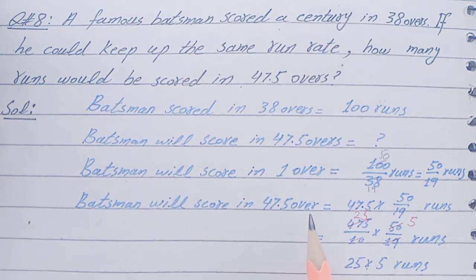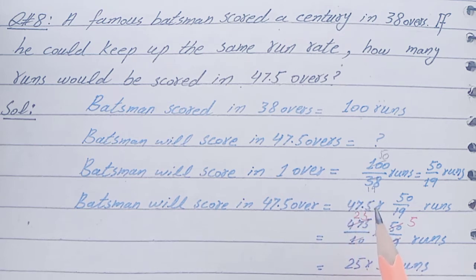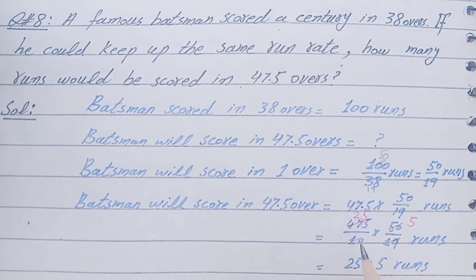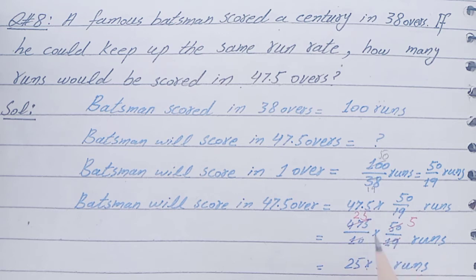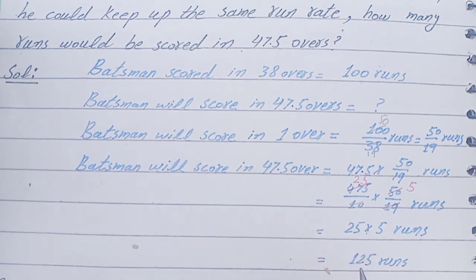Batsman will score in 47.5 hours: that value will be multiplied with 47.5, so 47.5 multiplied by 50 over 19. To remove the decimal point, we write 475 over 10, multiplied by 50 over 19. Cancelling 19 into 475 gives 25, and 10 cancels with 50 to give 5. So we have 25 multiplied by 5, which equals 125 runs. The batsman will score 125 runs in 47.5 hours.